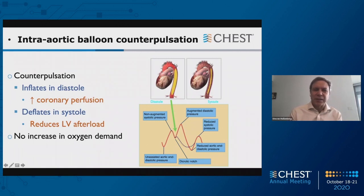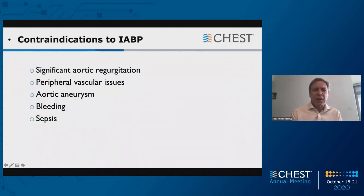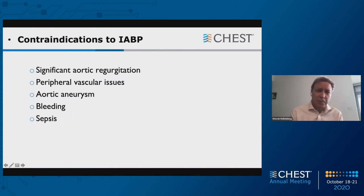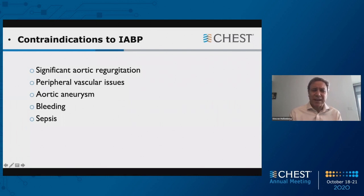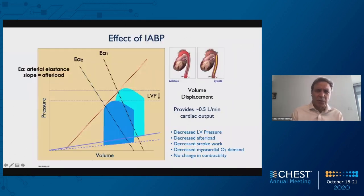This machine is mechanical, powered by electricity, so these effects occur without an increase in oxygen demand. There are a couple of contraindications to intra-aortic balloon pumping, the most common being significant aortic regurgitation — not just mild, but moderate-to-severe — since you don't want to be pumping blood back and raising diastolic pressure. Peripheral vascular issues can make placement difficult and cause downstream ischemia. If you have an aortic aneurysm, you don't want to be inflating and deflating a balloon against it. Bleeding and infectious conditions can also make you think twice.